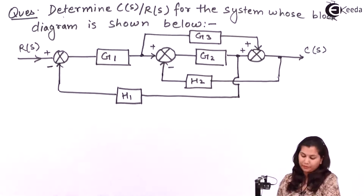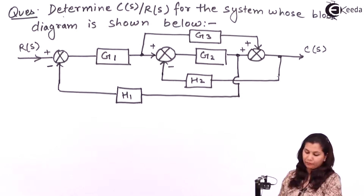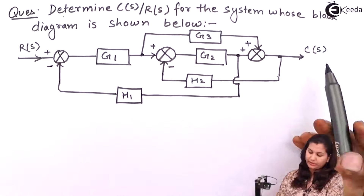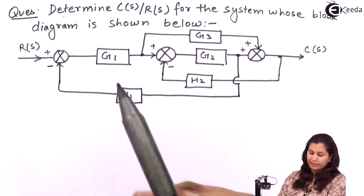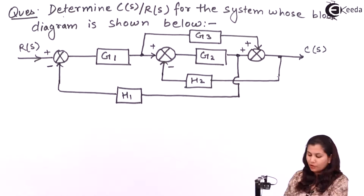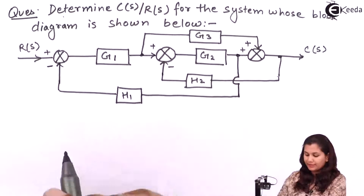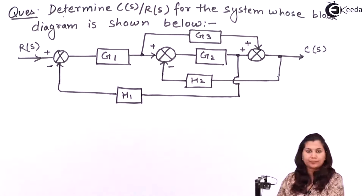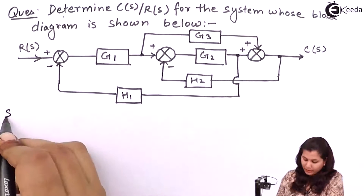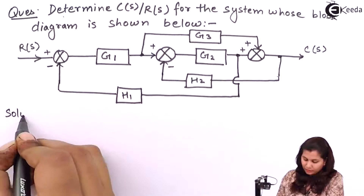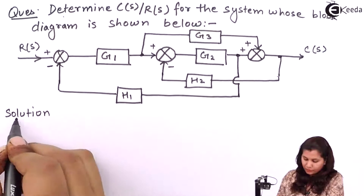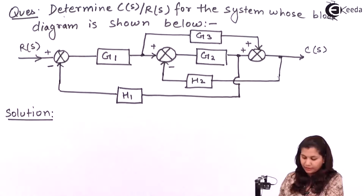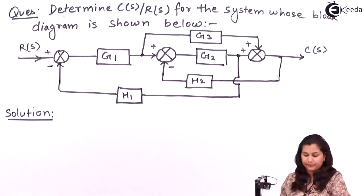So this is our problem and we have to find out the ratio that is C(S)/R(S), or we can say the transfer function of this system. So let's solve this problem of how we can find the transfer function using the block diagram reduction technique.